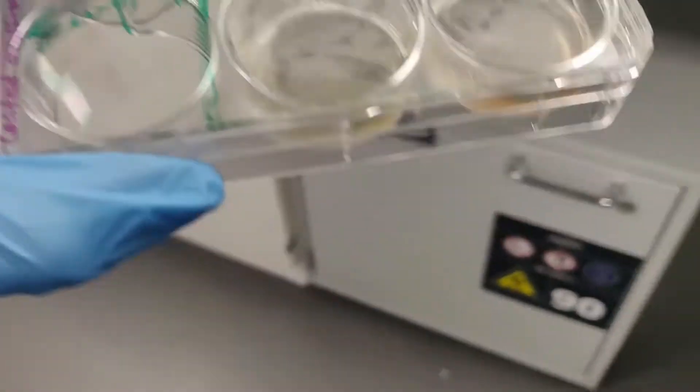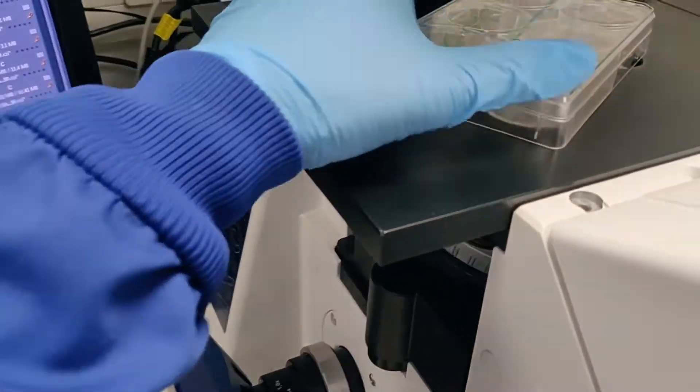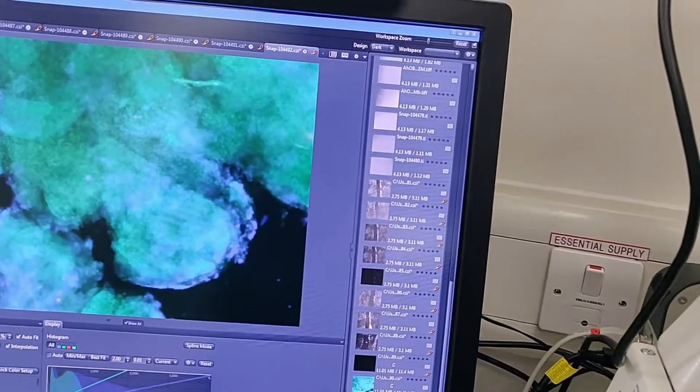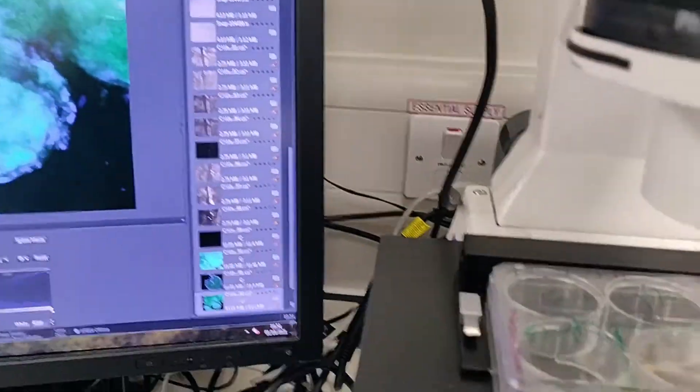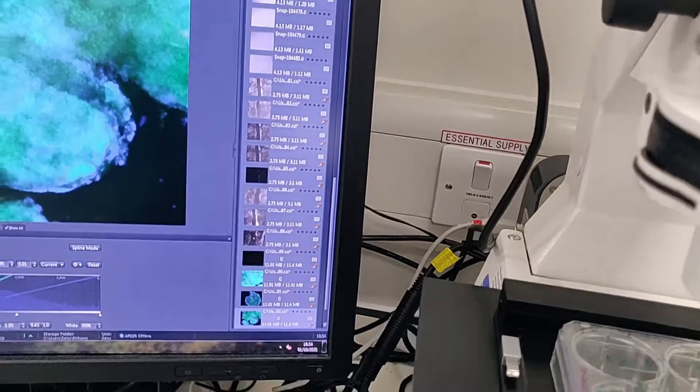And in the media, there is a substance that is called phenol red. And this phenol red changes from red to yellow when the pH decreases. So when the media becomes yellow very quickly, like in one day, we assume that there is some kind of contamination. So when the medium is cloudy and yellow, it's safe to assume that there is a contamination.